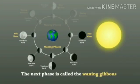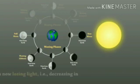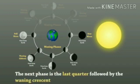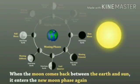The next phase is called waning gibbous. As the moon is now losing light — decreasing in illumination — we use the term waning. The next phase is the last quarter, followed by the waning crescent. When the moon comes back between the earth and the sun, it enters the new moon phase again.